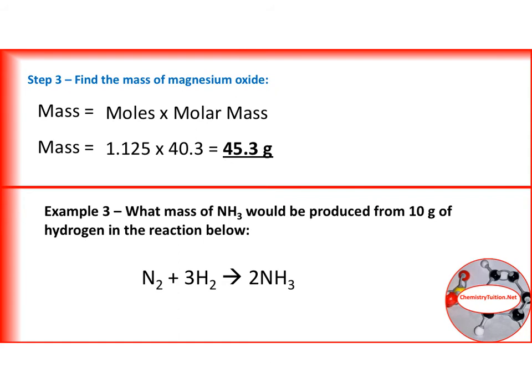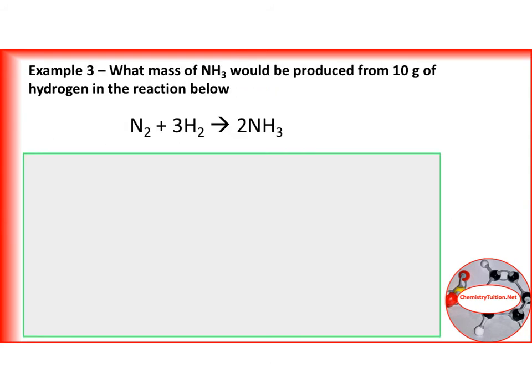Otherwise, have a pause and then check your answer at the end. So I'm sure you're pretty familiar with these now. So we've been told how much hydrogen we have and we need to work out the mass of ammonia that we are going to produce.